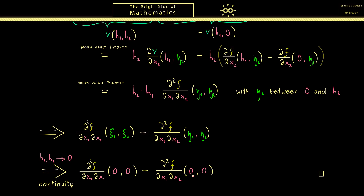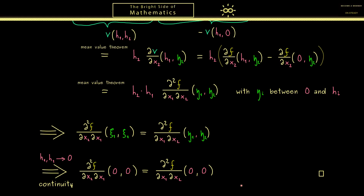With this you now know Schwarz's theorem, which allows us to change the order of partial derivatives under the stated assumptions. This is an important result we will use in many other videos later. Let's meet in the next video — have a nice day. Bye!